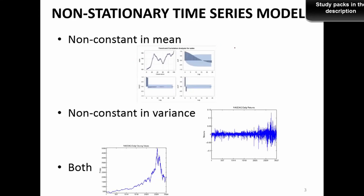In time series, stationarity is very common — you need stationary data for forecasting. But most real-world data is non-stationary in nature, and non-stationarity can bring problems that have to be dealt with. You need to make a non-stationary series stationary to use it for forecasting. Stationarity means you should have a constant mean and a constant variance.